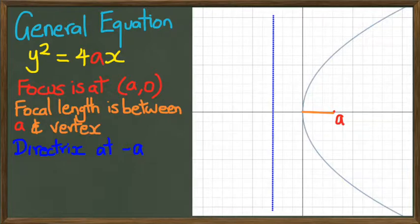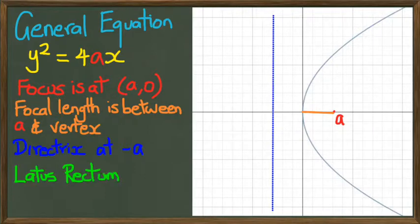Finally there is this thing called latus rectum, which is actually the length between the two points that it connects on the y-axis. As you can see, that is the latus rectum right there.